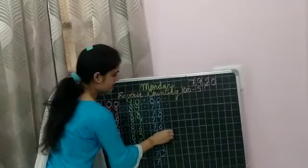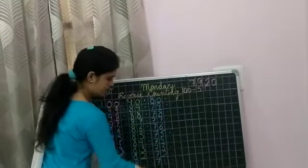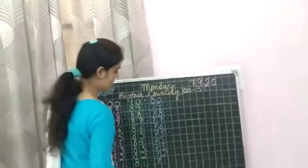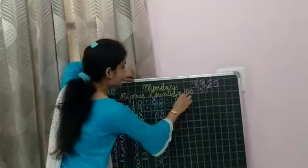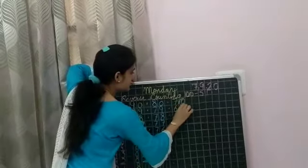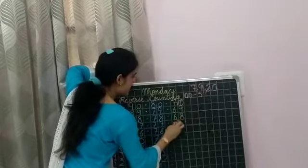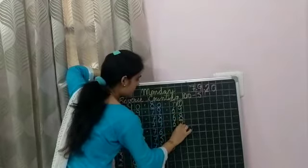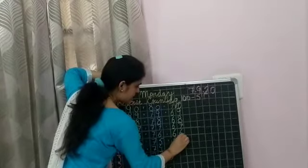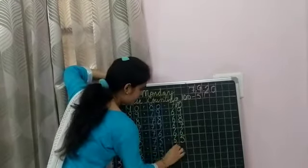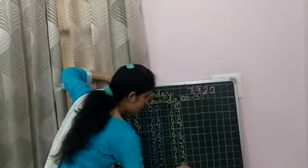Now, leave one line again. Now, we will write. Seventy. And, what comes before seventy? Sixty-nine. Sixty-eight. Sixty-seven. Sixty-six. Sixty-five. Sixty-four. Sixty-three. Sixty-two. And, sixty-one.